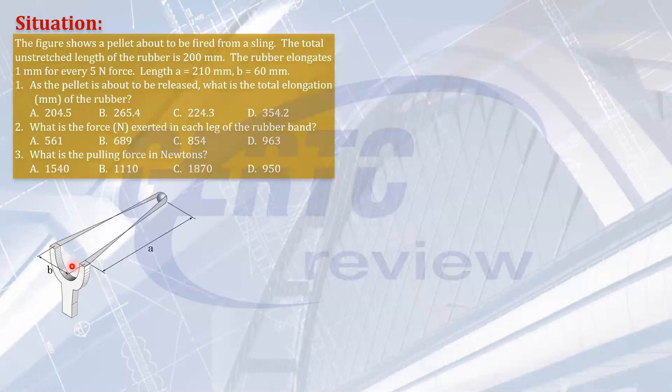So let's solve the problem. Let's draw the top view of our slingshot. These two points have a width of B. Let's draw the initial position, initial unstretched length. The rubber band unstretched length is 200 mm. That means every side of it will be 100 mm. This is 100 and 100. This is the unstretched length before the pellet is about to be fired.